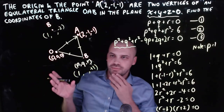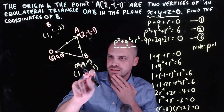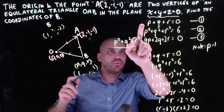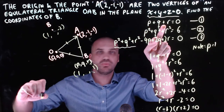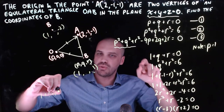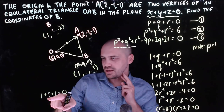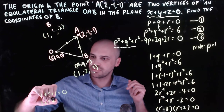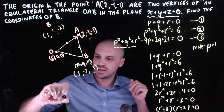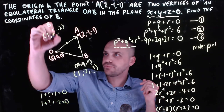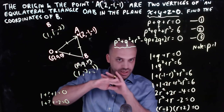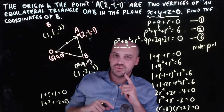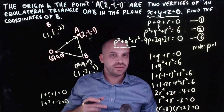We're finished. We know p = 1, and the two values of r give us the two points B. If r = 1, then 1 + q + 1 = 0, so q = −2, giving B = (1, −2, 1). If r = −2, then 1 + q + (−2) = 0, so q = 1, giving B = (1, 1, −2). The coordinates of B are either (1, 1, −2) or (1, −2, 1). Good question!